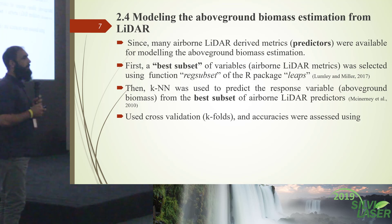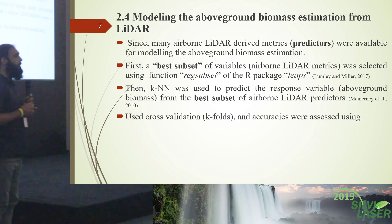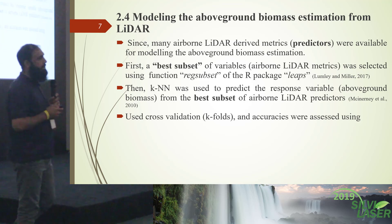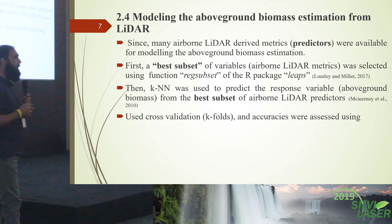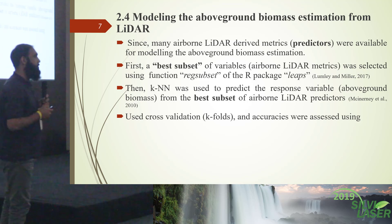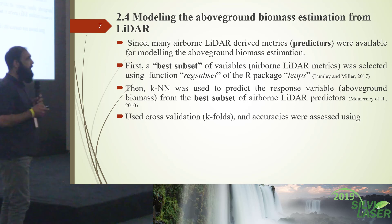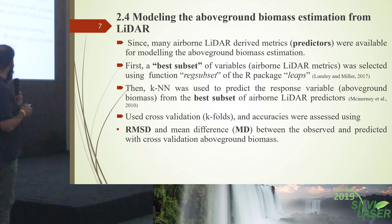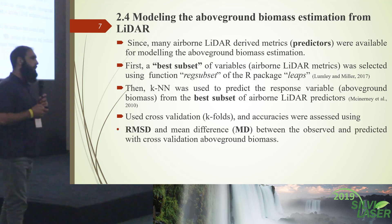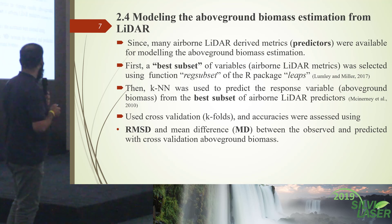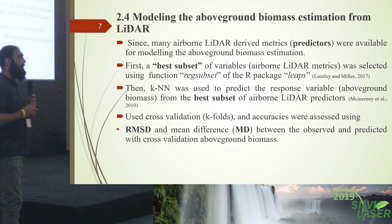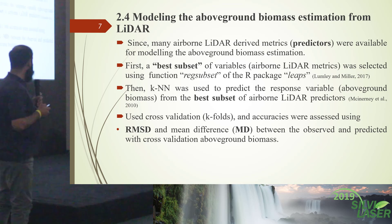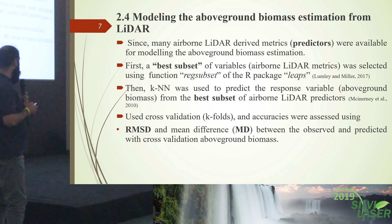We divided the data into 10 groups. We removed the first fold, fitted the model with the nine remaining folds, and predicted the first one, then removed the second fold, and so on. We calculated the RMSD and mean difference between the predicted and observed values to find precision and bias.